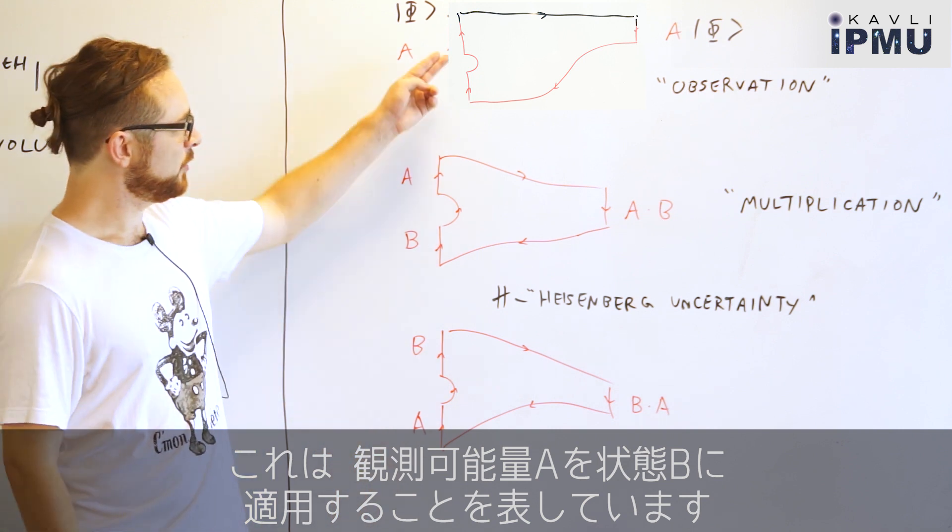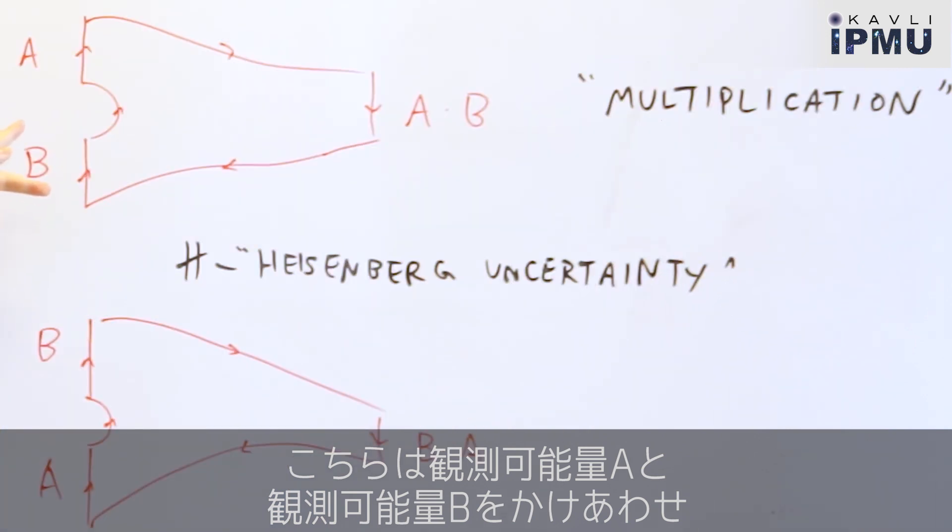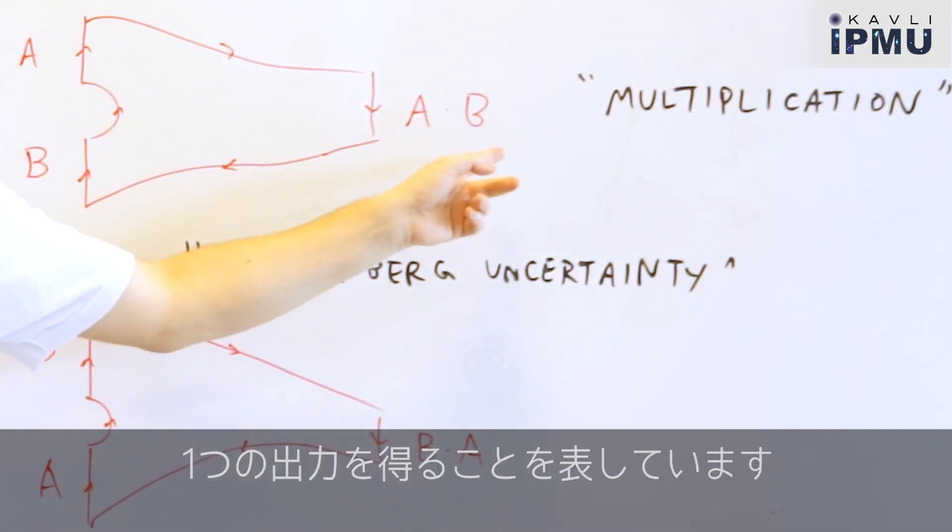This one tells you to apply the observable A to the state B, and this one tells you to multiply two observables A and B together to get a product out.